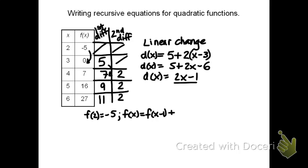I now know, because of this 2x minus 1, that my recursive equation is any term is equal to the previous term plus 2x minus 1.